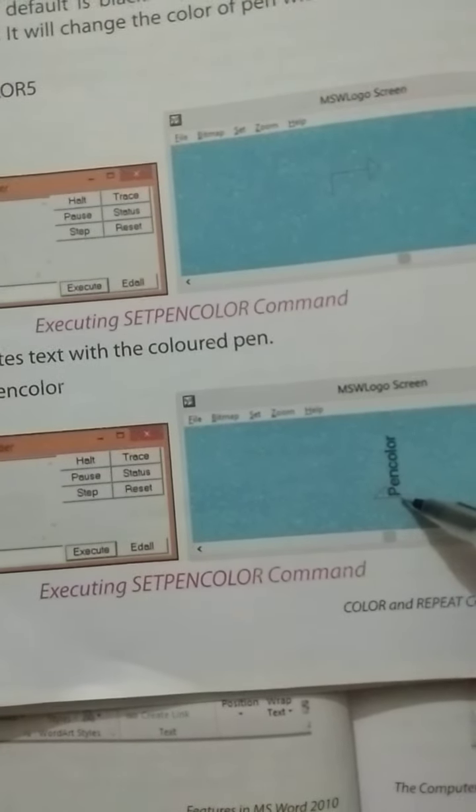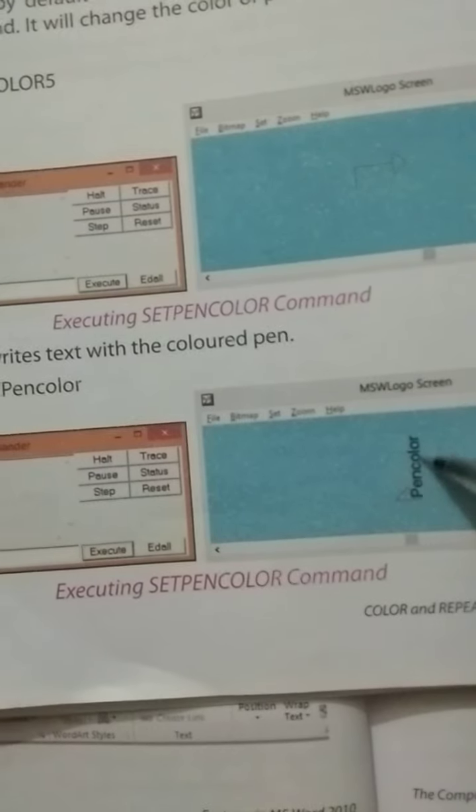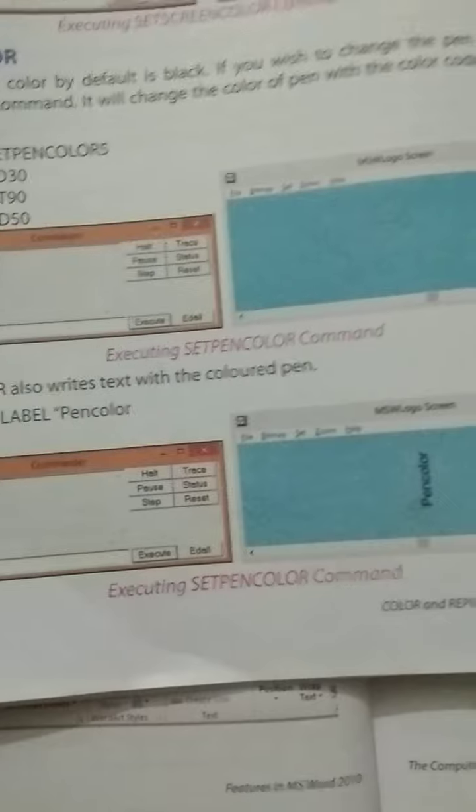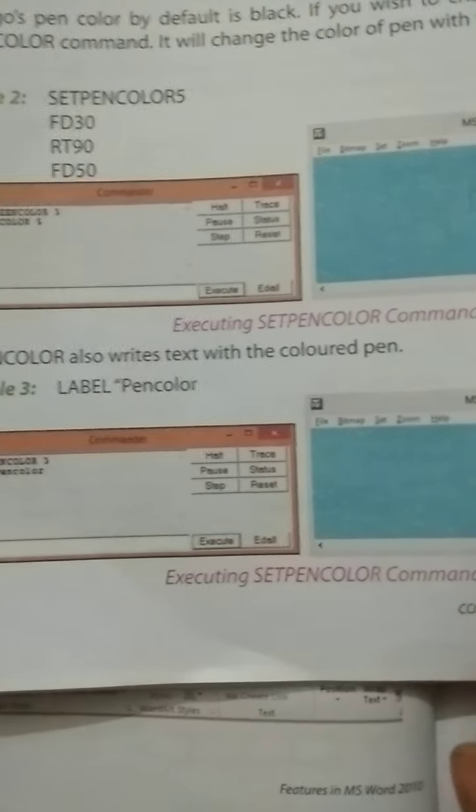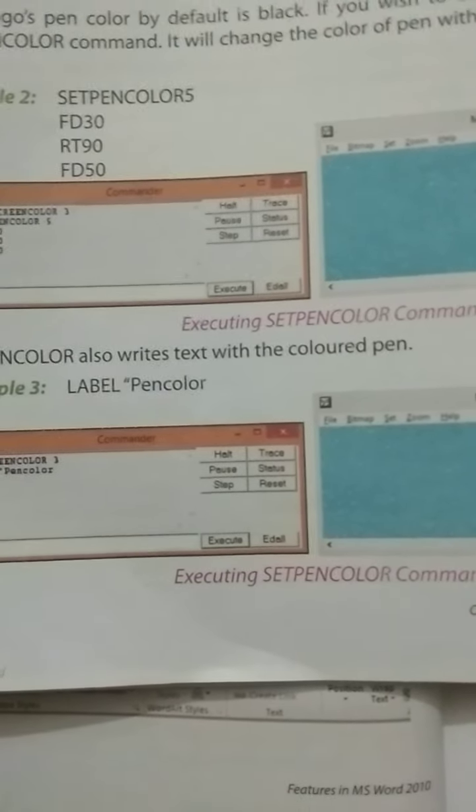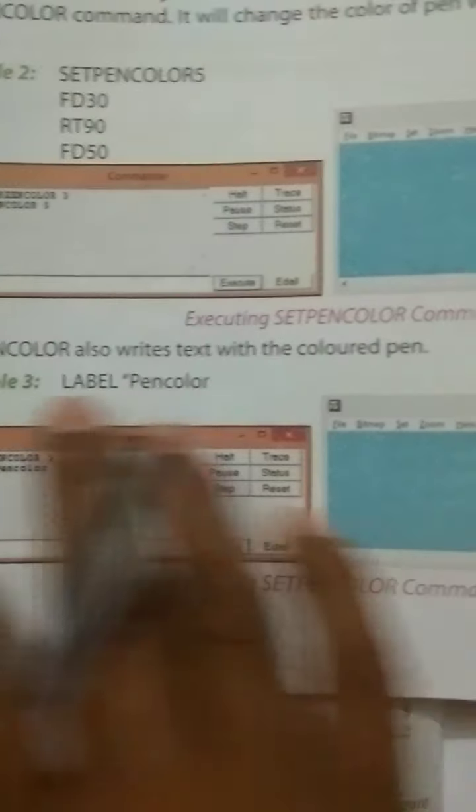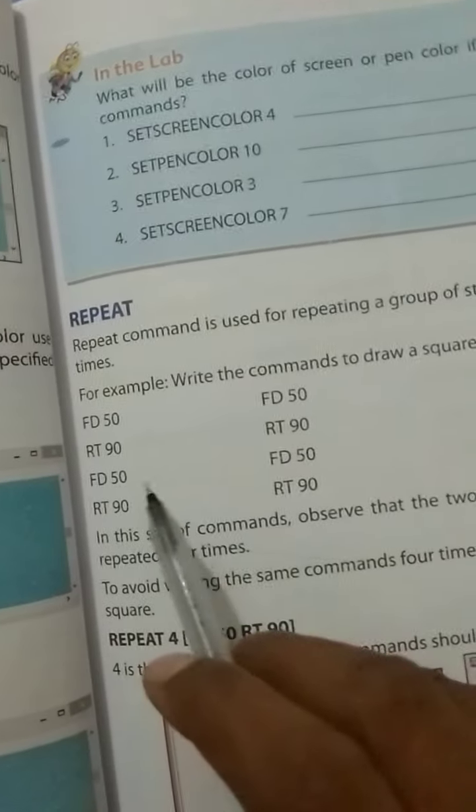Here you can see that the paint color is written. This is the text and the process will be written for the text. I will show you in practical, so don't worry about it. Just read what I teach you.